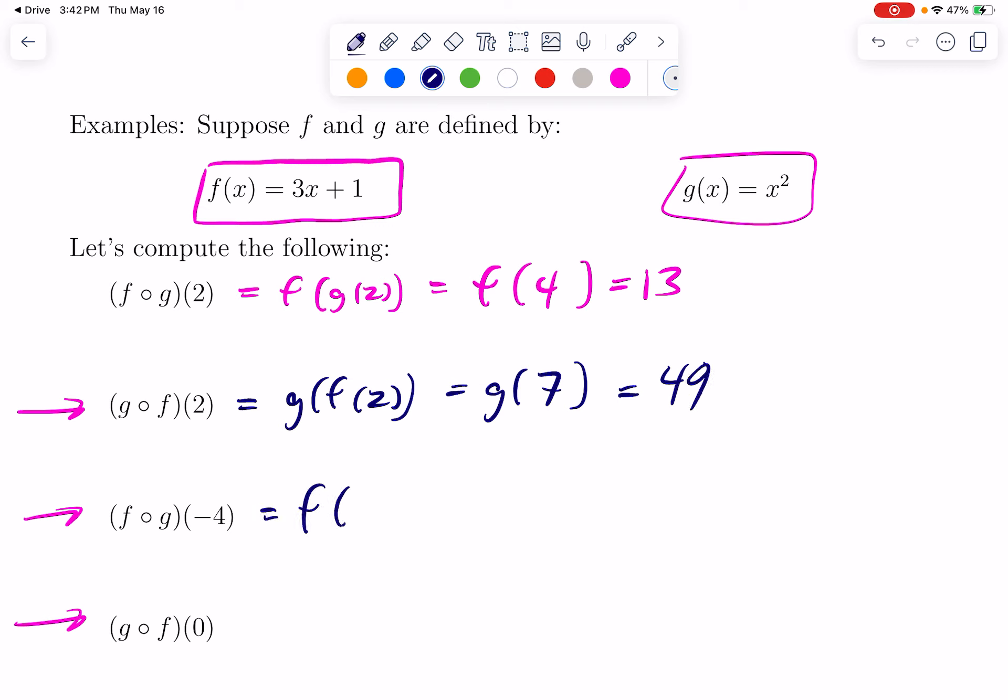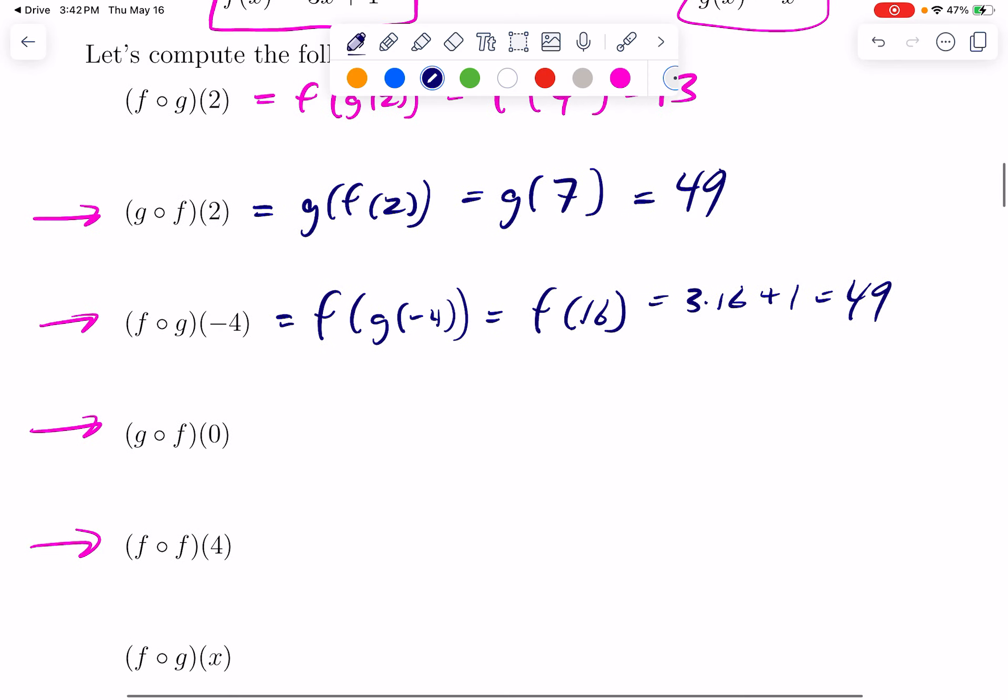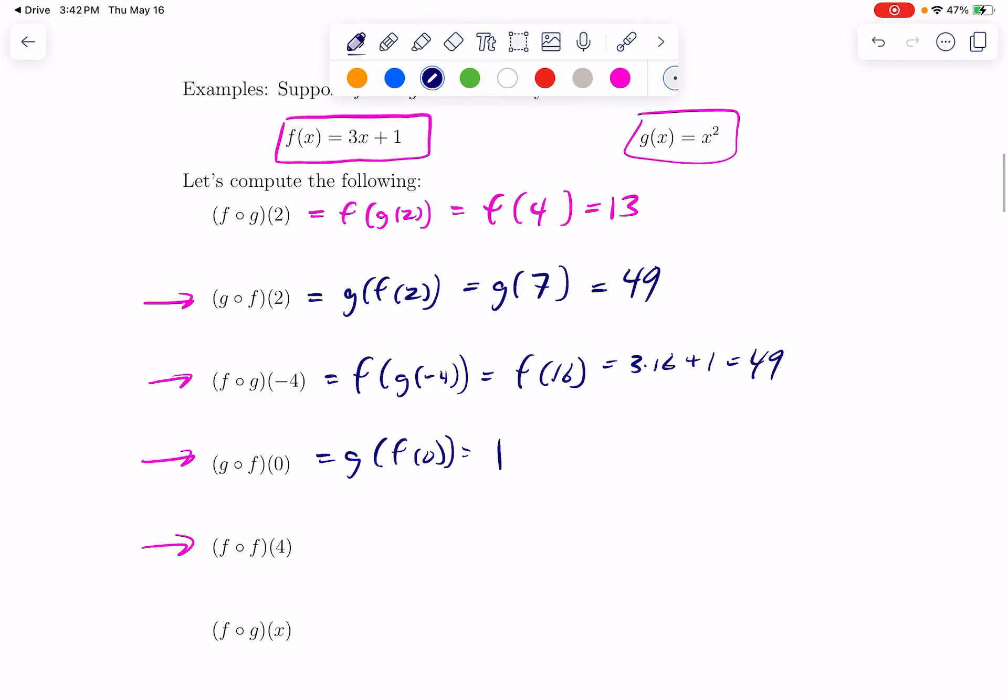This next one is F of G of negative 4. G of negative 4 is 16. F of 16 would be 3 times 16 plus 1, which is also 49 just by a coincidence. Here we would have G of F of 0. F of 0 is 1.